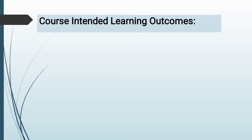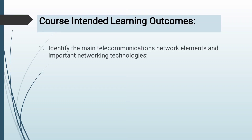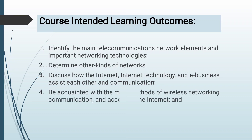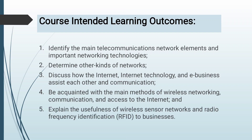As we go on with my topic, we're going to: identify the main telecommunications network elements and important networking technologies; determine other kinds of networks; discuss how internet technology and e-business assist each other in communications; be acquainted with the main methods of wireless networking, communication, and internet access; and explain the usefulness of wireless sensor networks and RFID to businesses.